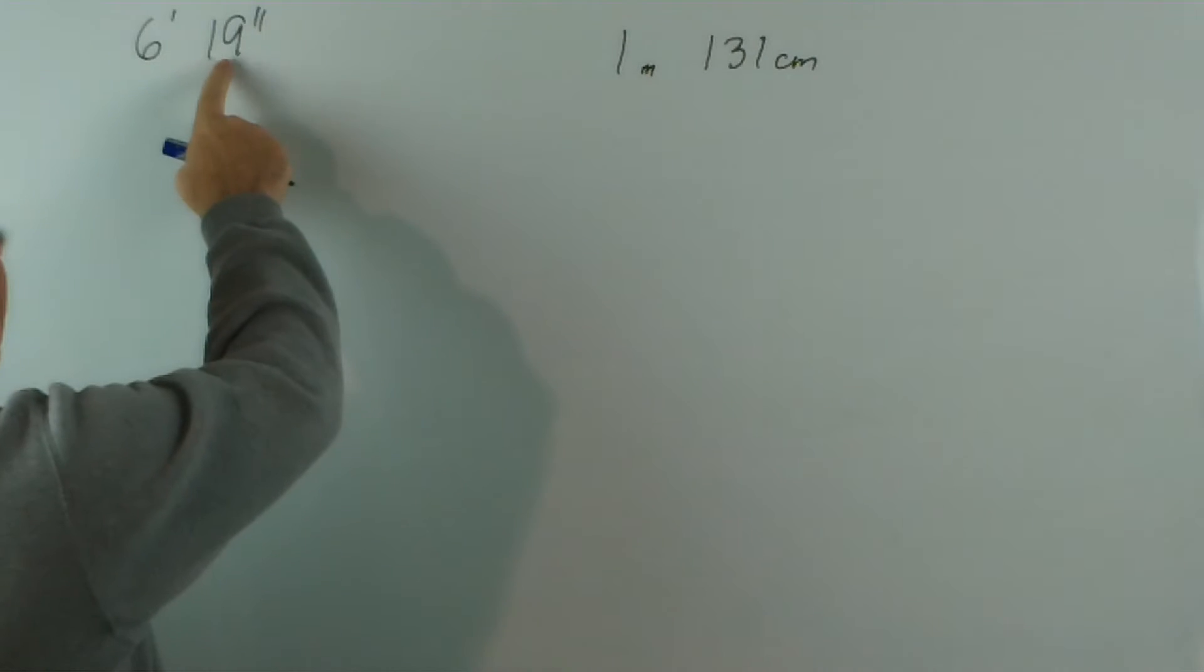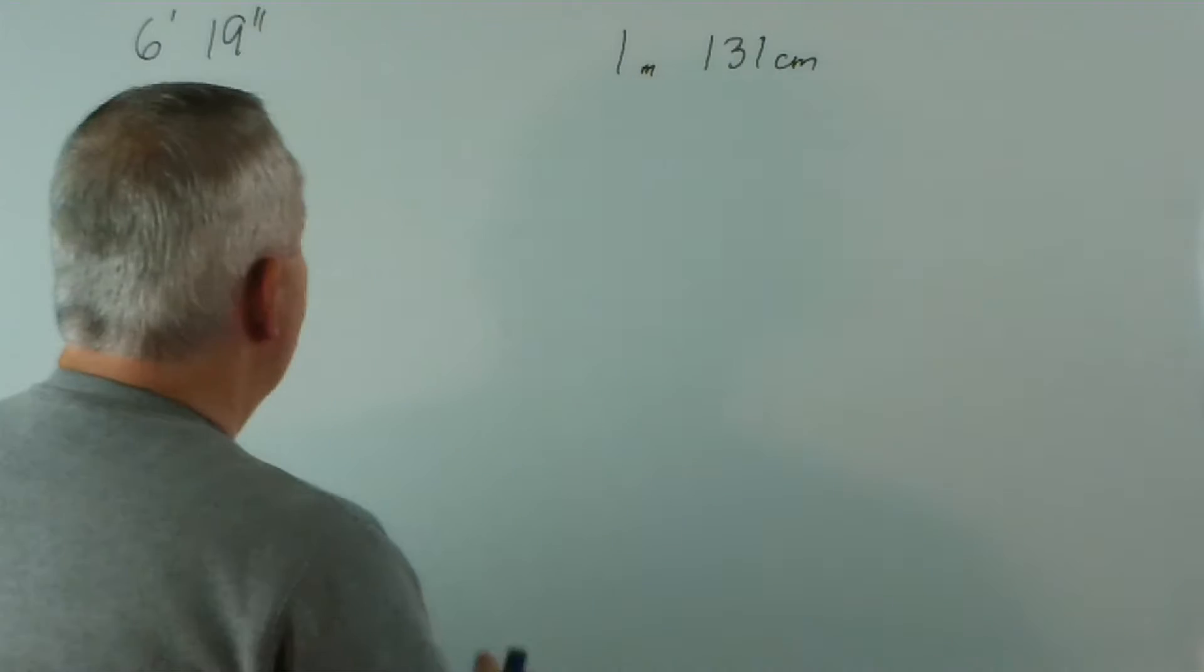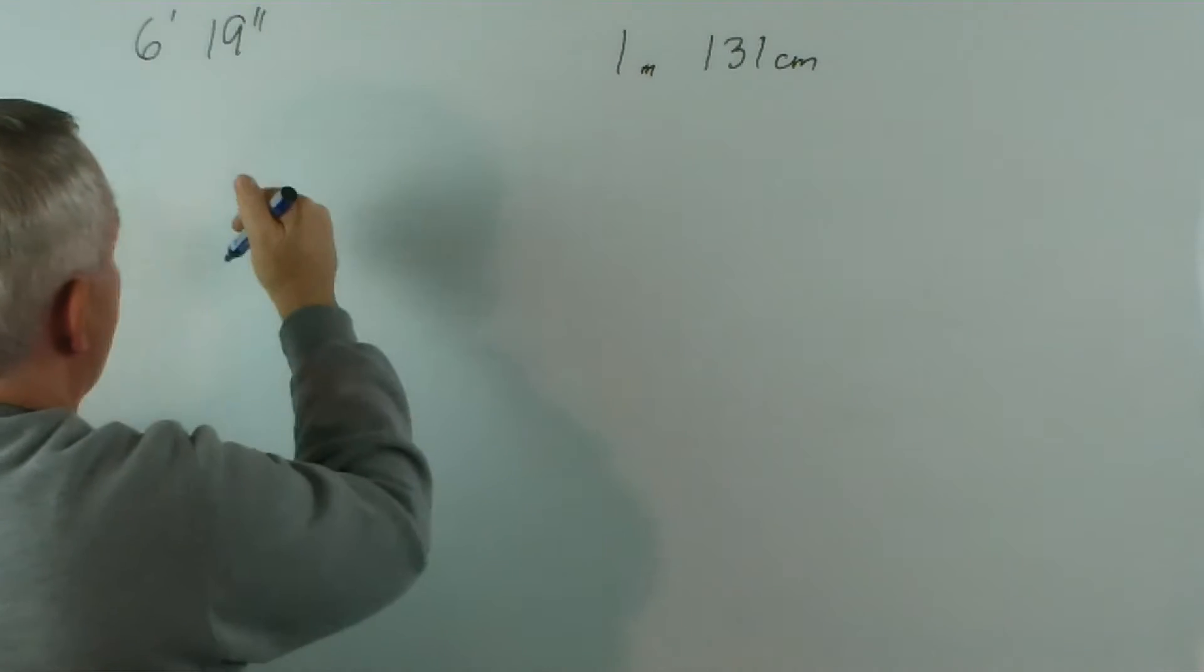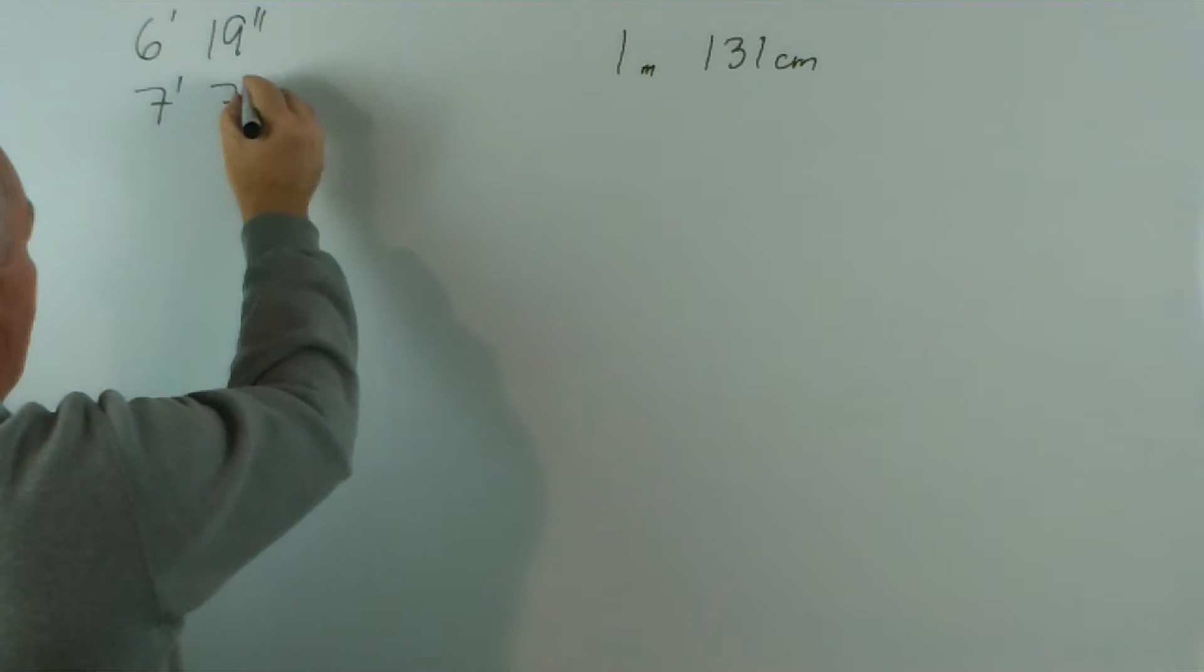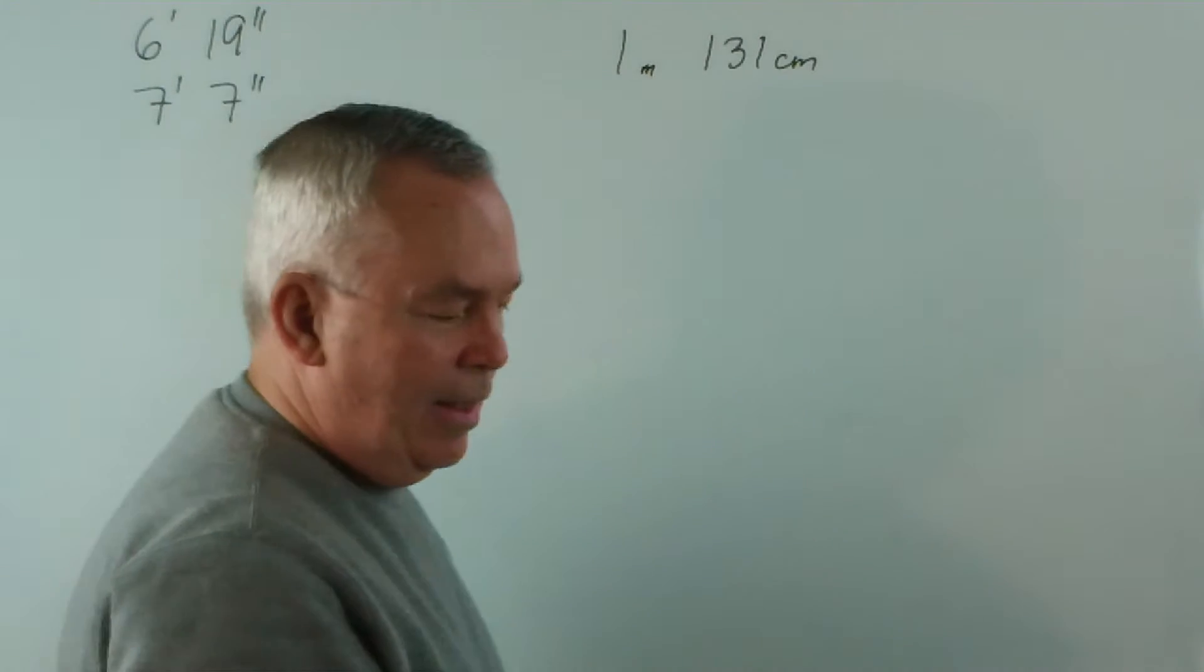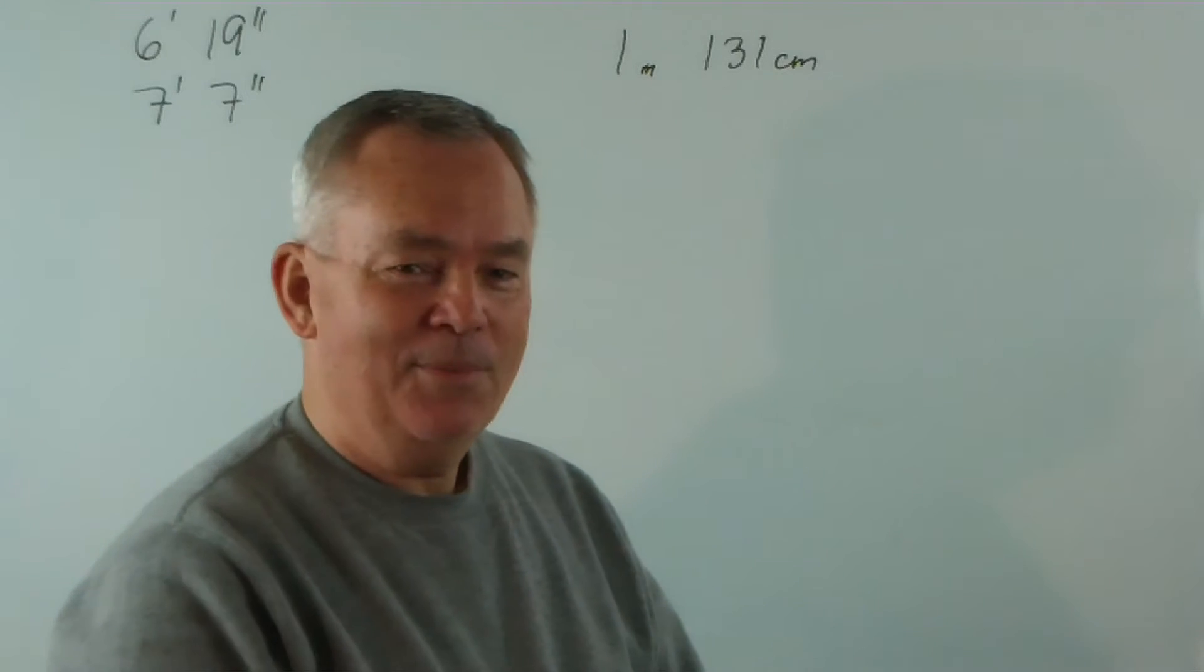The fact is that there are 12 inches in a foot and 19 is significantly more than 12. So, if we actually take 12 of those inches out — he was, in fact, seven feet and take 12 away from nineteen. Seven feet, seven inches — I would have loved him on my basketball team.